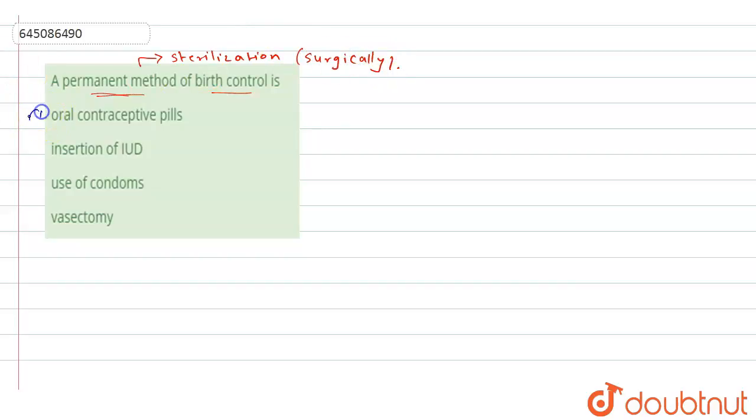First is the oral contraceptive pill. We have a lot of oral contraceptive pills like Saheli, Mala-D, but they are not permanent methods. They are temporary methods of birth control.